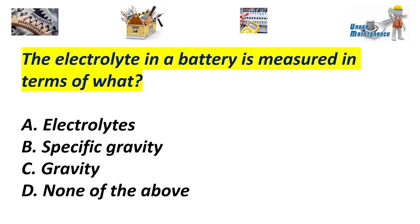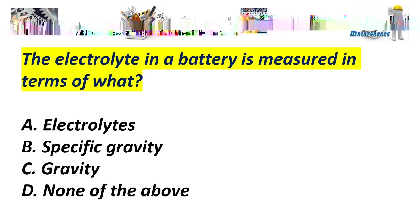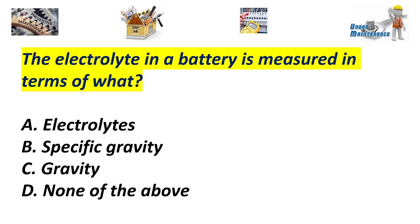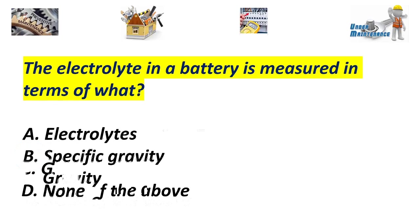The electrolyte in a battery is measured in terms of what? A. Electrolytes. B. Specific gravity. C. Gravity. D. None of the above. Answer: B. Specific gravity.